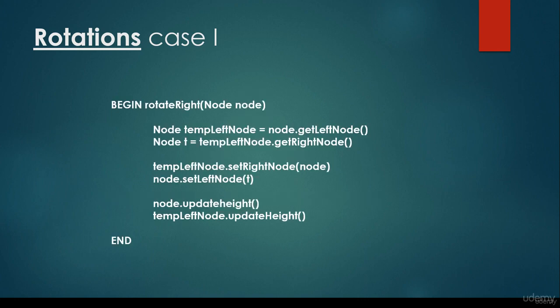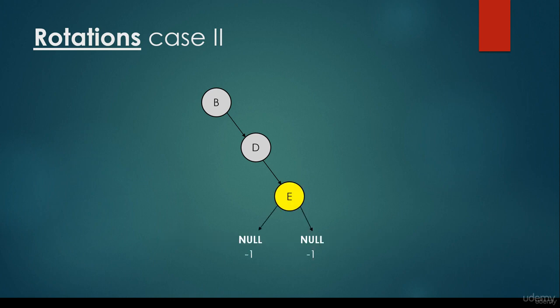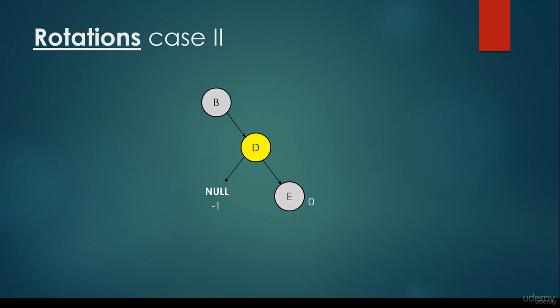Of course we have to update the height parameters because they change according to the rotation. What about case 2? It is quite symmetric — this is the so-called doubly right-heavy situation. We have to do approximately the same as for case 1 but in the opposite direction, making a simple left rotation on the root node. Let's check whether it is a valid AVL tree. Node E has a left null child and a right null child, both with height parameter minus 1.